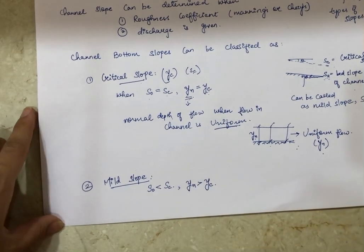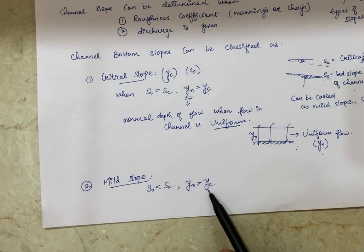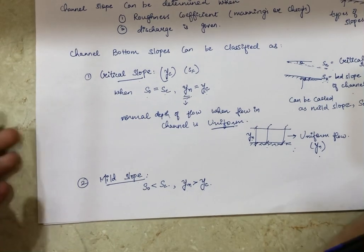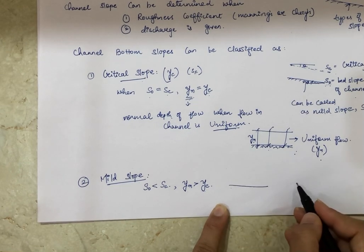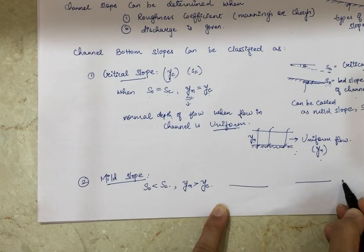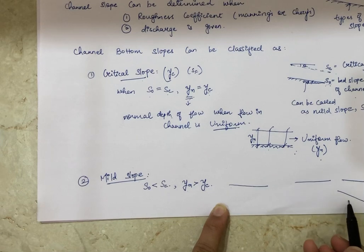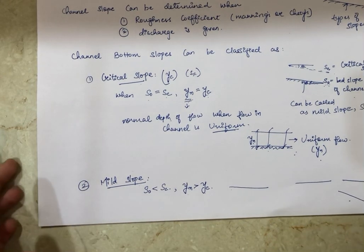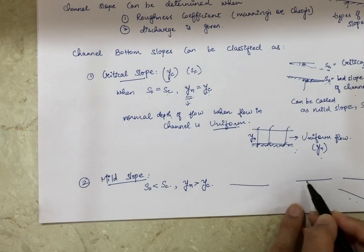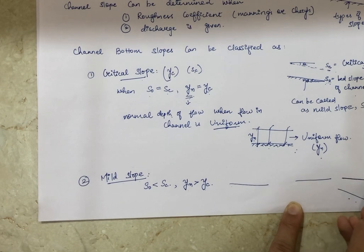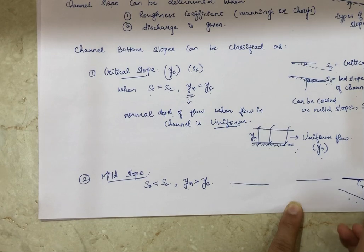In a mild slope condition, the normal depth is greater than the critical depth. If the channel bed is nearly horizontal — only slightly tilted from horizontal — we can call it a mild slope. If it is more steeply inclined, we would not call it mild slope; that is a different term called steep slope, which we will study next.